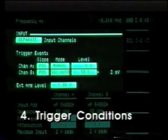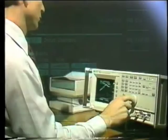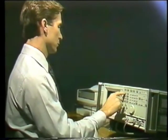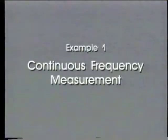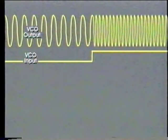To show you how to make these selections, we'll take a look at two real examples, programming the menus as we go. In the first example, we want to measure how long it takes a VCO to settle on a new frequency after the input voltage is stepped.